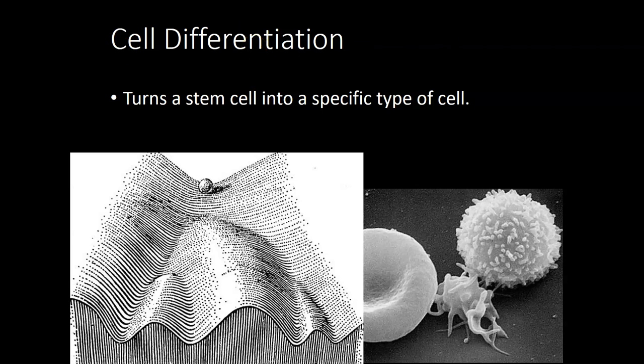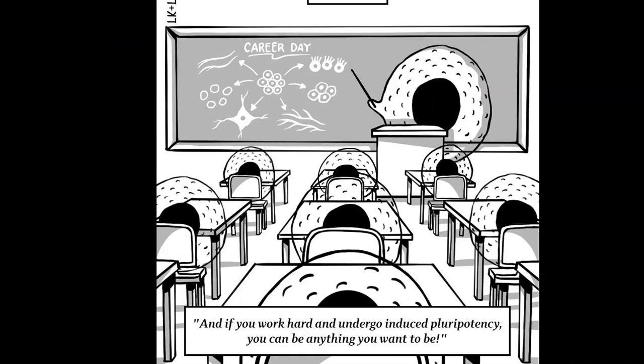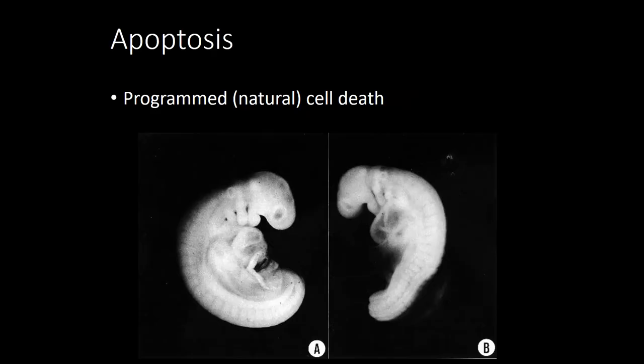This whole process comes about by regulating which genes get activated and which get silenced in a specific cell line. A silly analogy: that process of differentiation is like going to school. You're going to school so you can have a specific job later in life — your cells have to do that too, specializing or differentiating to become their very specific thing.